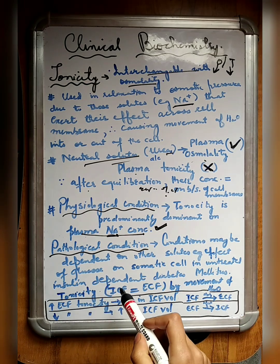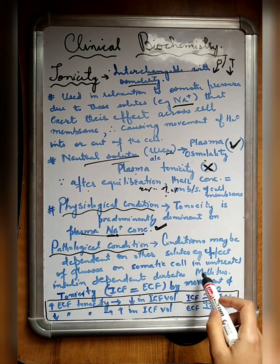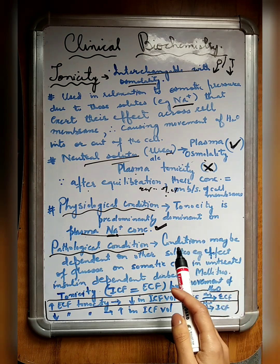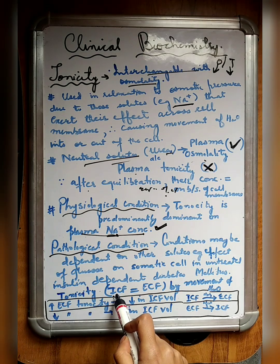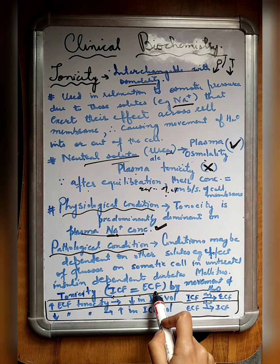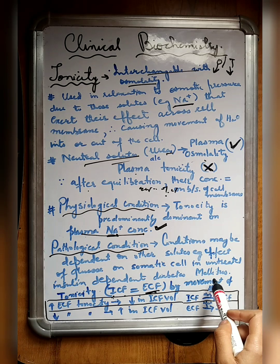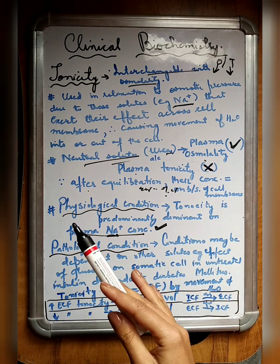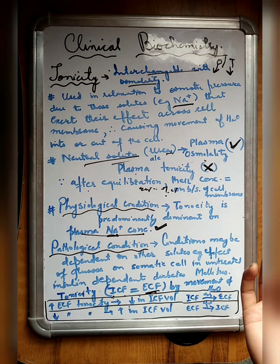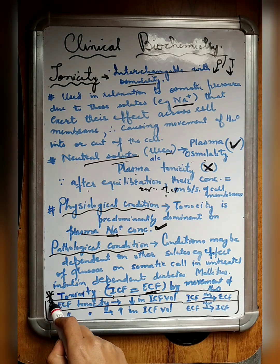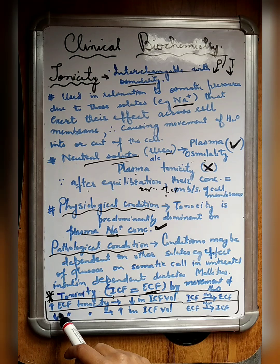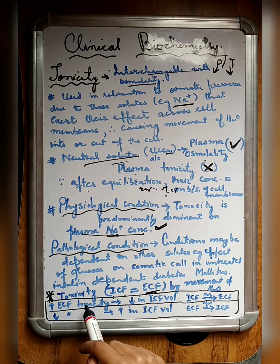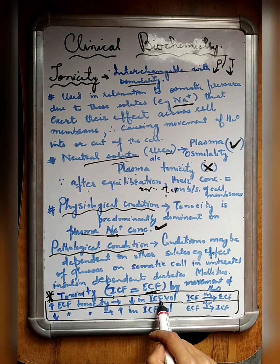When water moves from one compartment to another, it tries to maintain or equilibrate the tonicity across the ICF and the ECF by changing the concentration of water from one compartment to the other. This is important to remember: when there is an increase in ECF tonicity, there occurs a decrease in ICF volume.